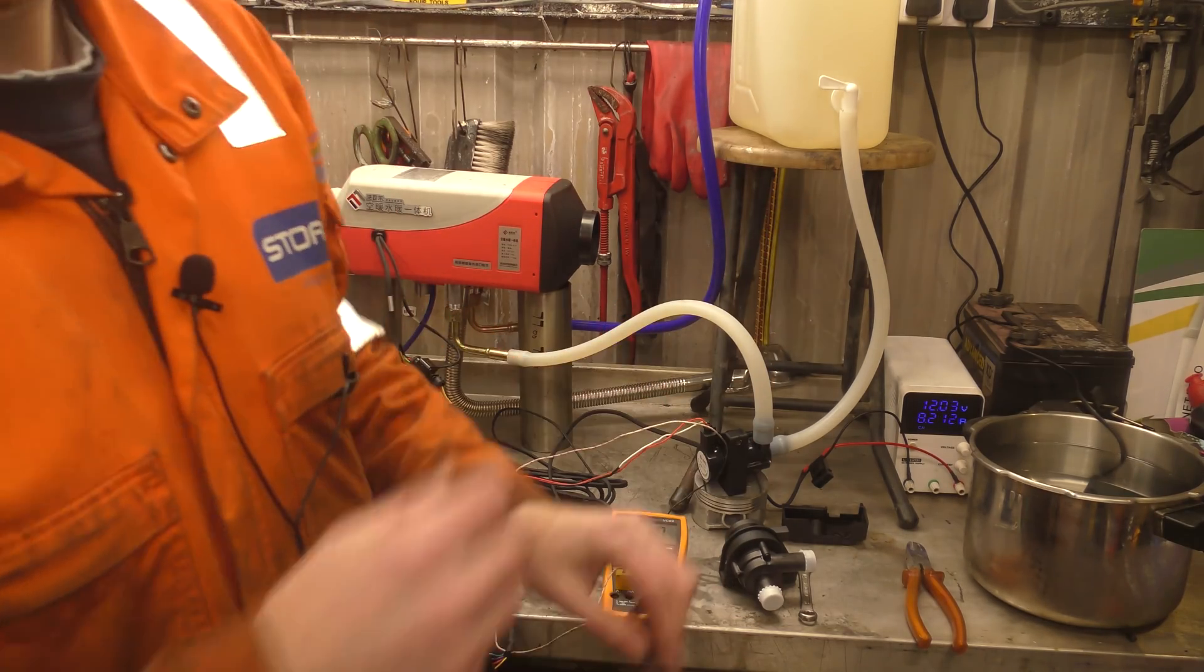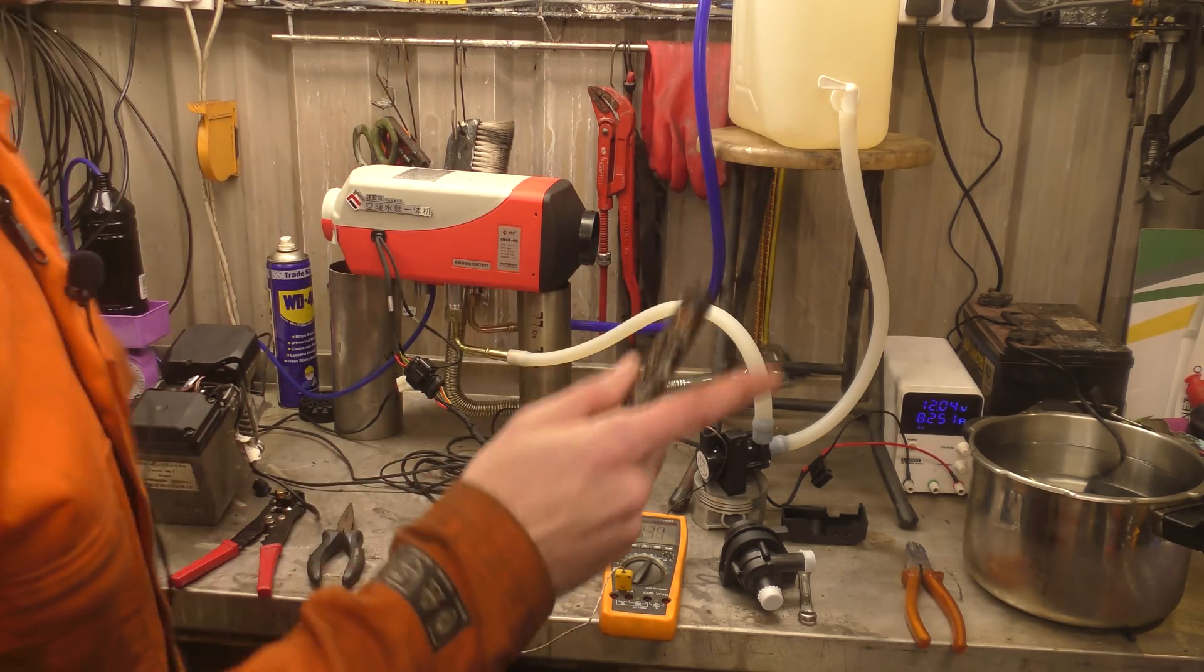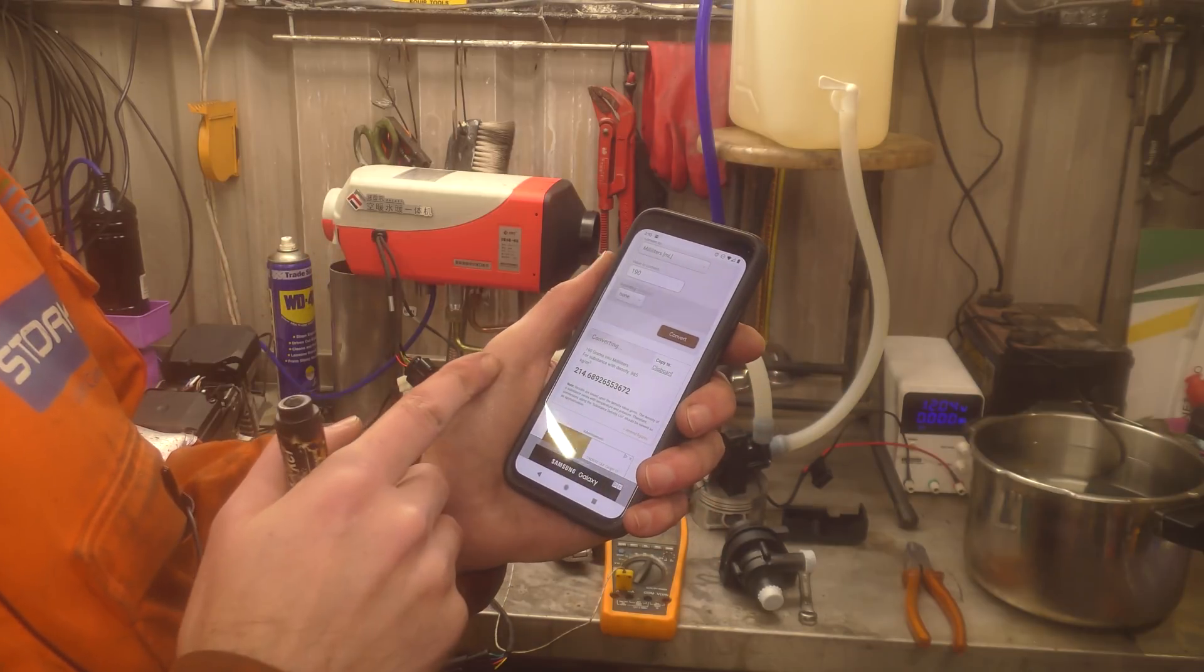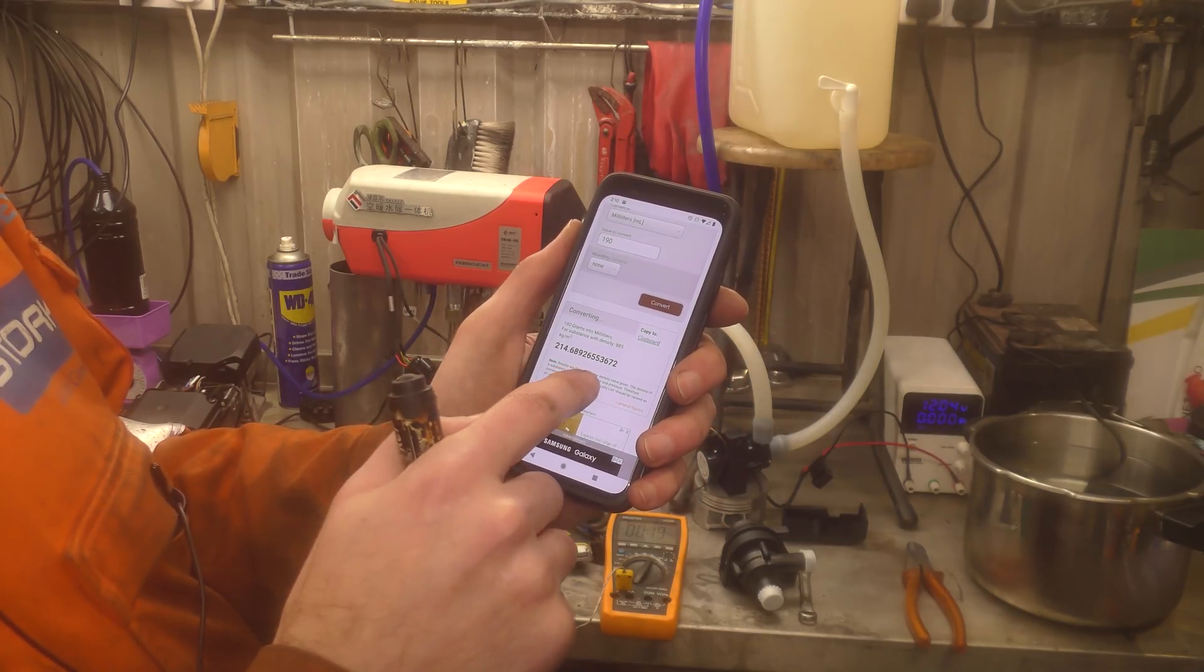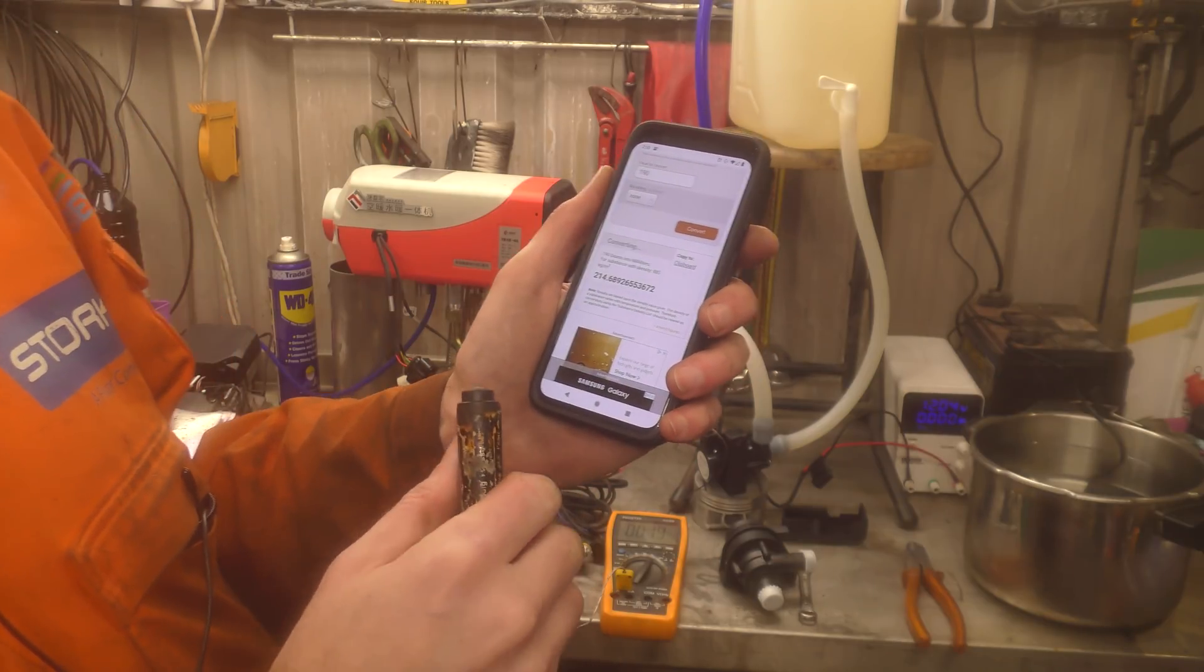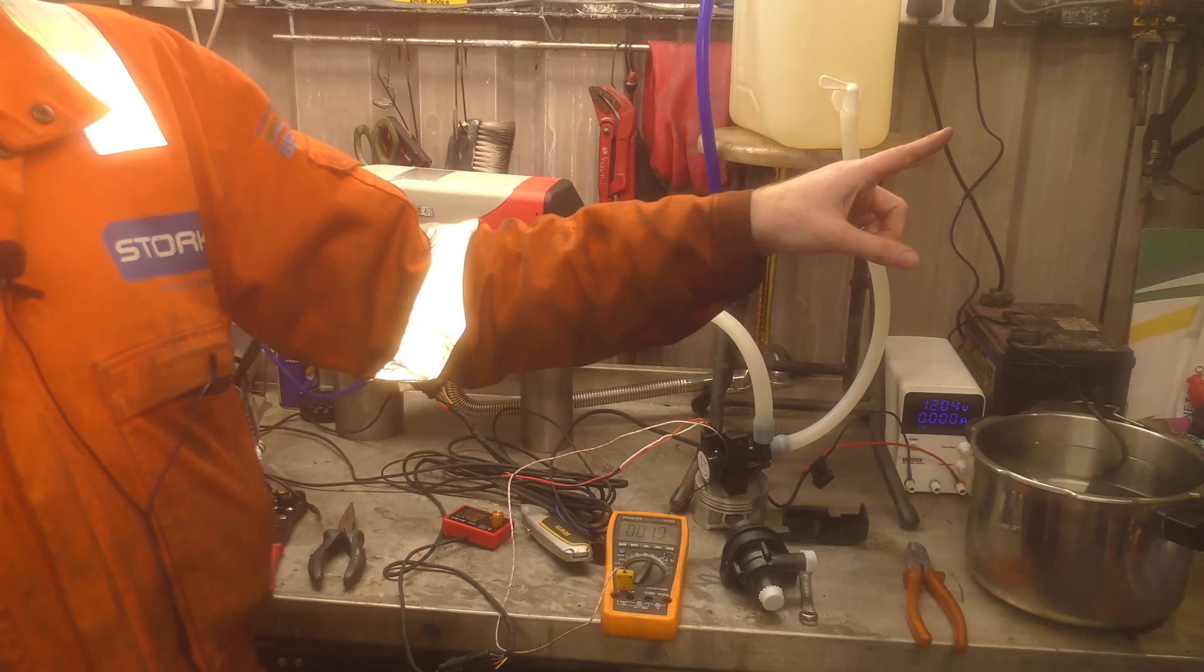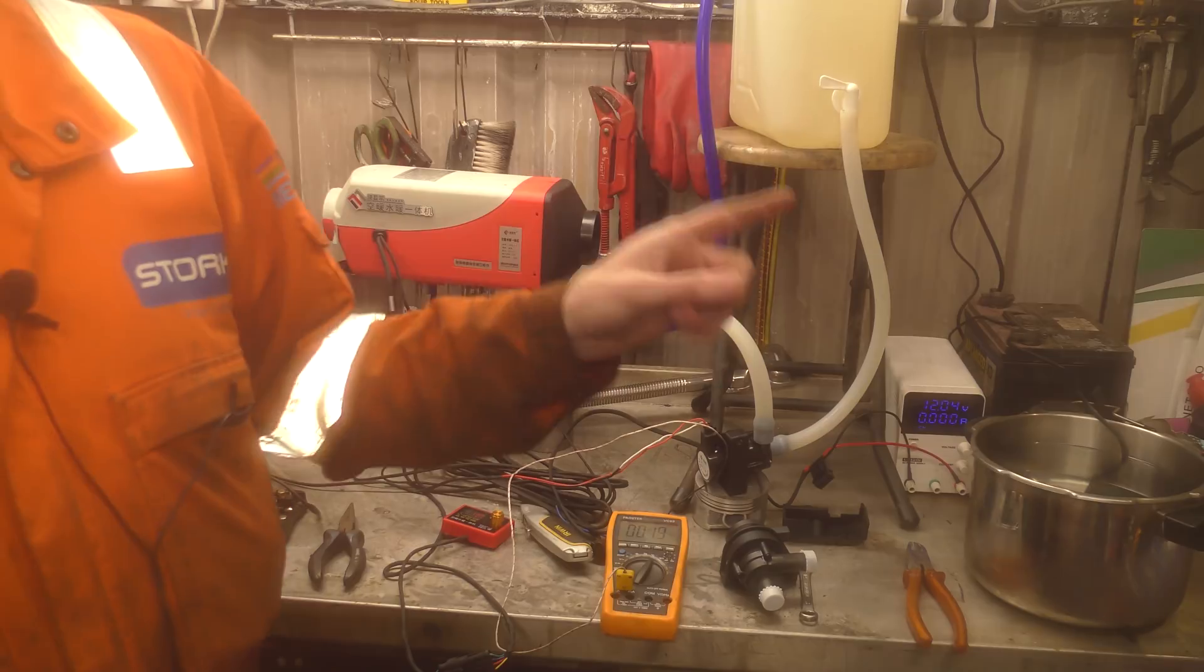Right. Okay. Half an hour. Raised up to 69 degrees. And I'll just work out how much fuel it used. Okay, according to science and my phone, we have converted, well, first of all, we used 190 grams of diesel. And I've converted that using this website into millilitres and it gives us 214.6 millilitres or 215 millilitres of diesel in that half hour burn. I hope somebody's writing this down. We went from 14 degrees to 70 degrees in half an hour and used 215 millilitres of diesel for the air diesel heater. Right. On the next one.